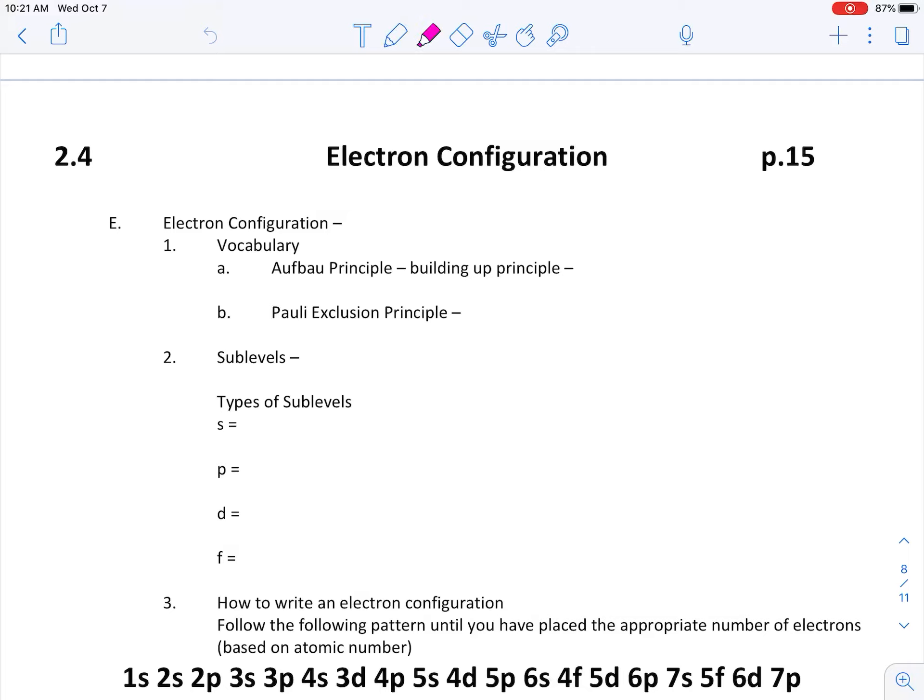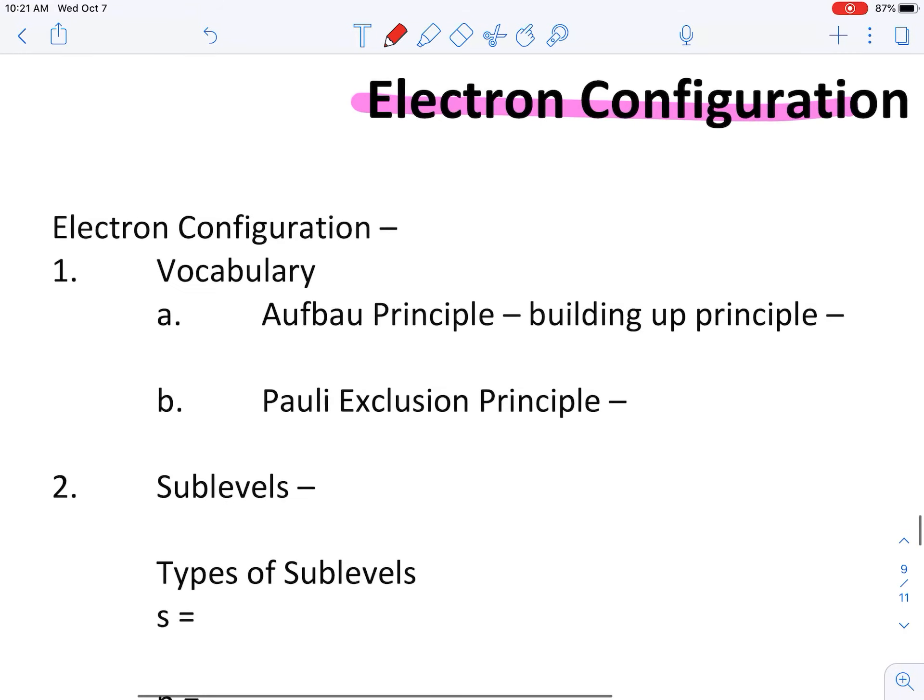Okay, electron configurations is 2.4. Electron configuration, this is page 15. Hopefully we're keeping up with that. Can't believe we're already on 15 pages of notes. So let's go ahead and jump right in. Electron configurations are, our definition is, the address of the electrons. We all have home addresses. This tells us the address of our electrons, because that becomes important. In the next unit, we're going to talk about them bonding, so we need to know their addresses and what they do.